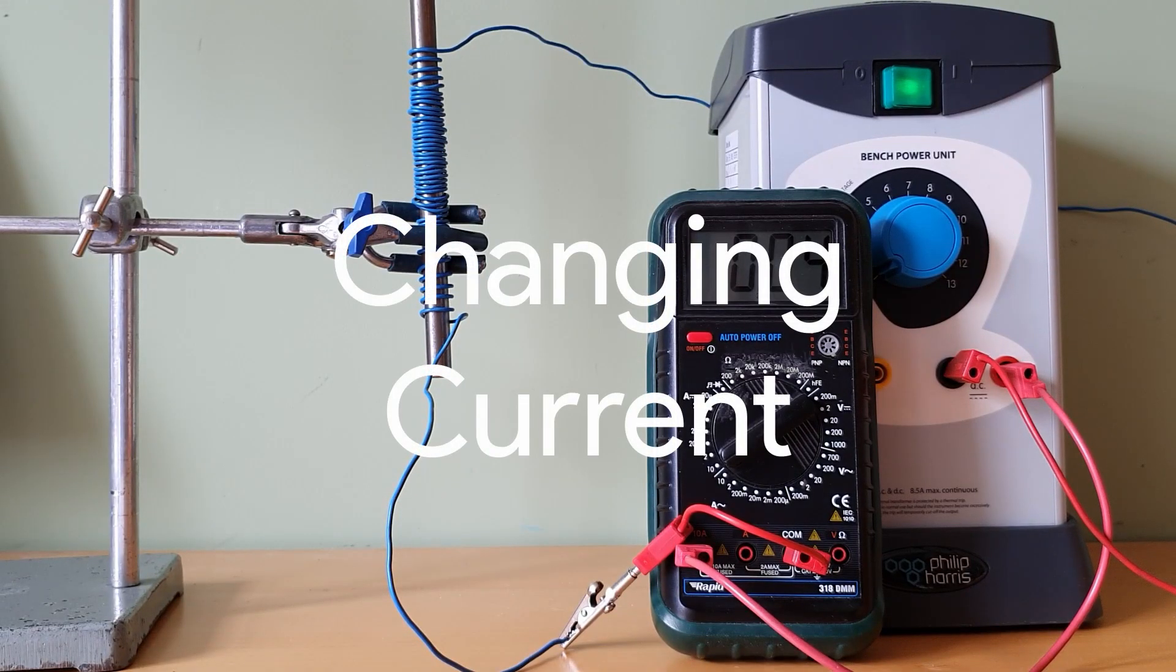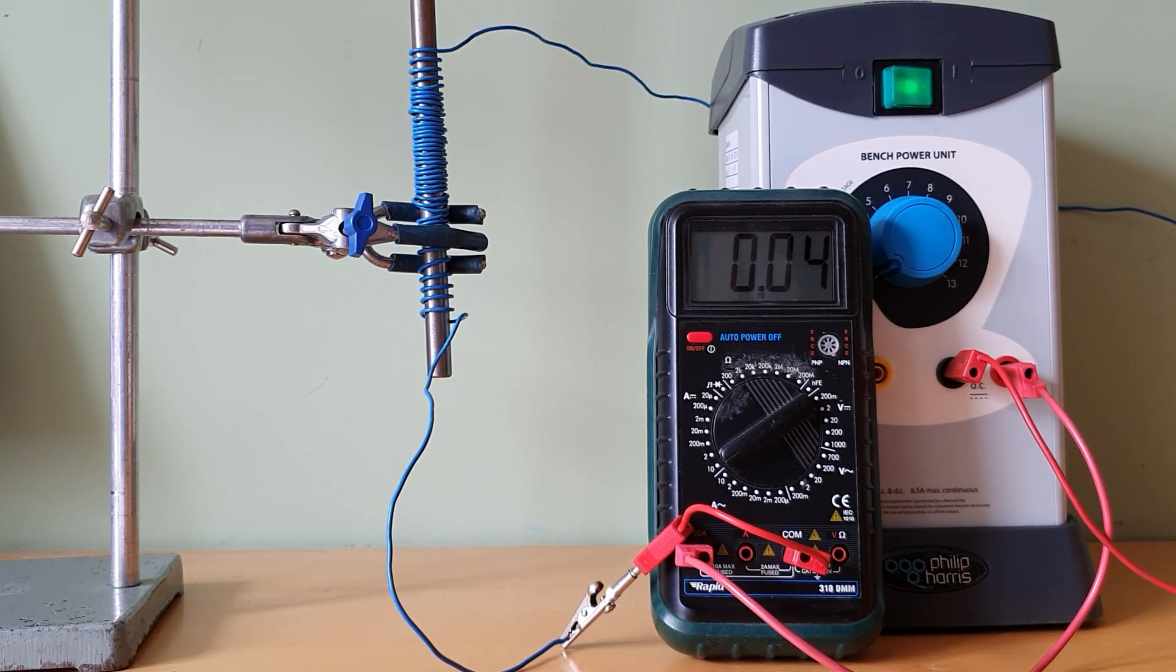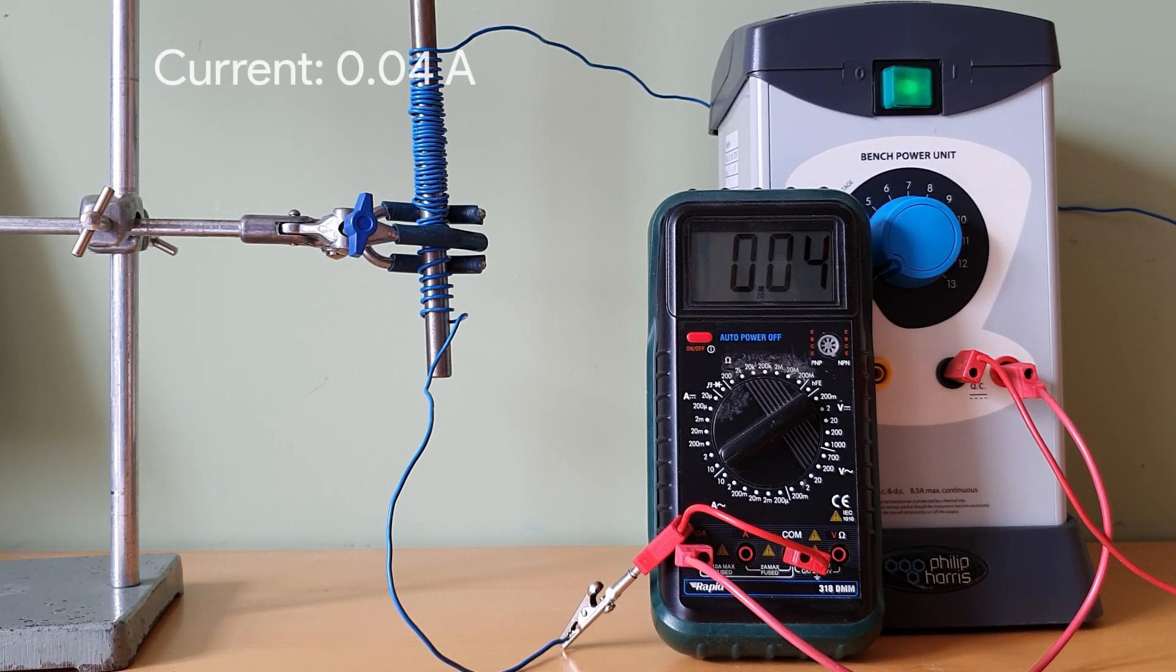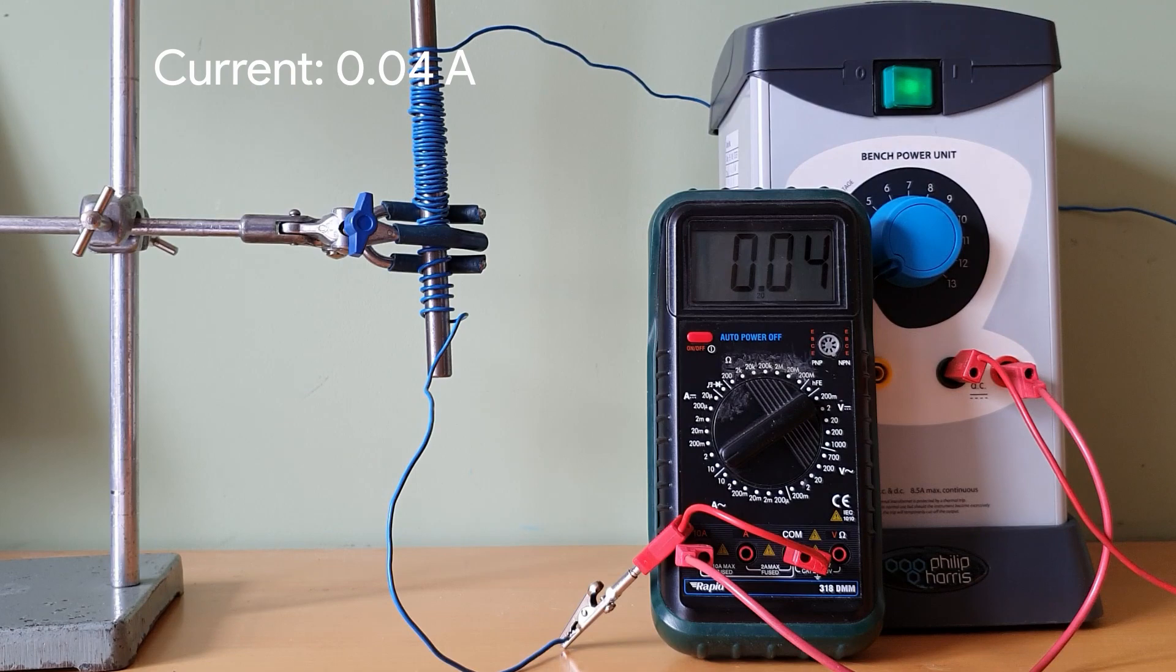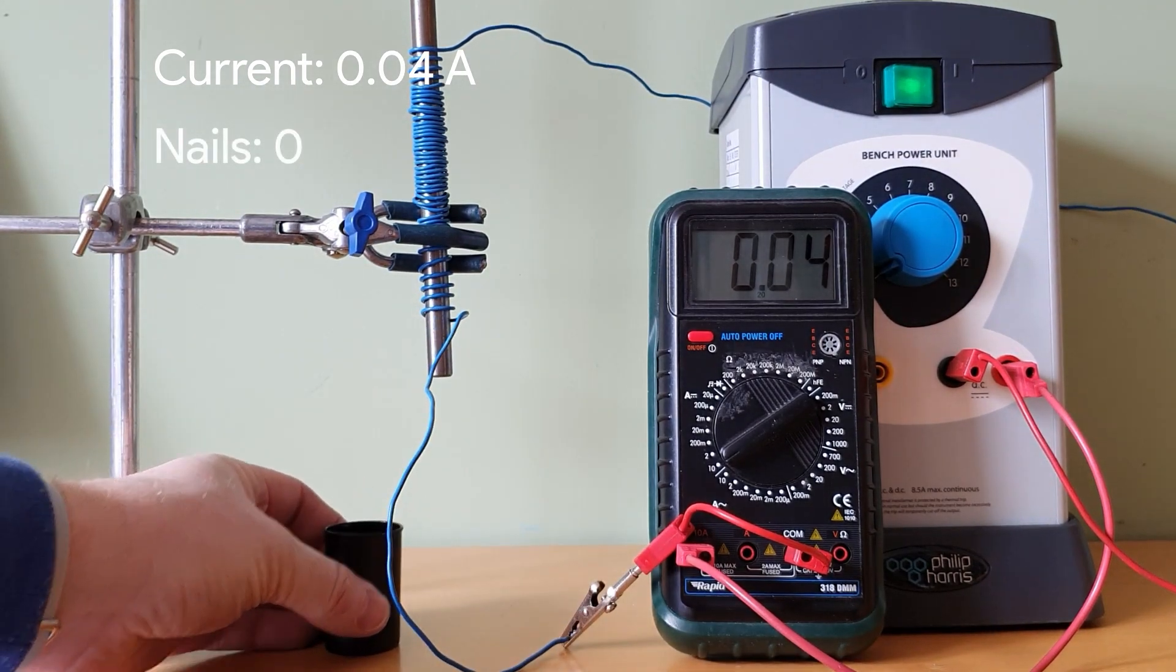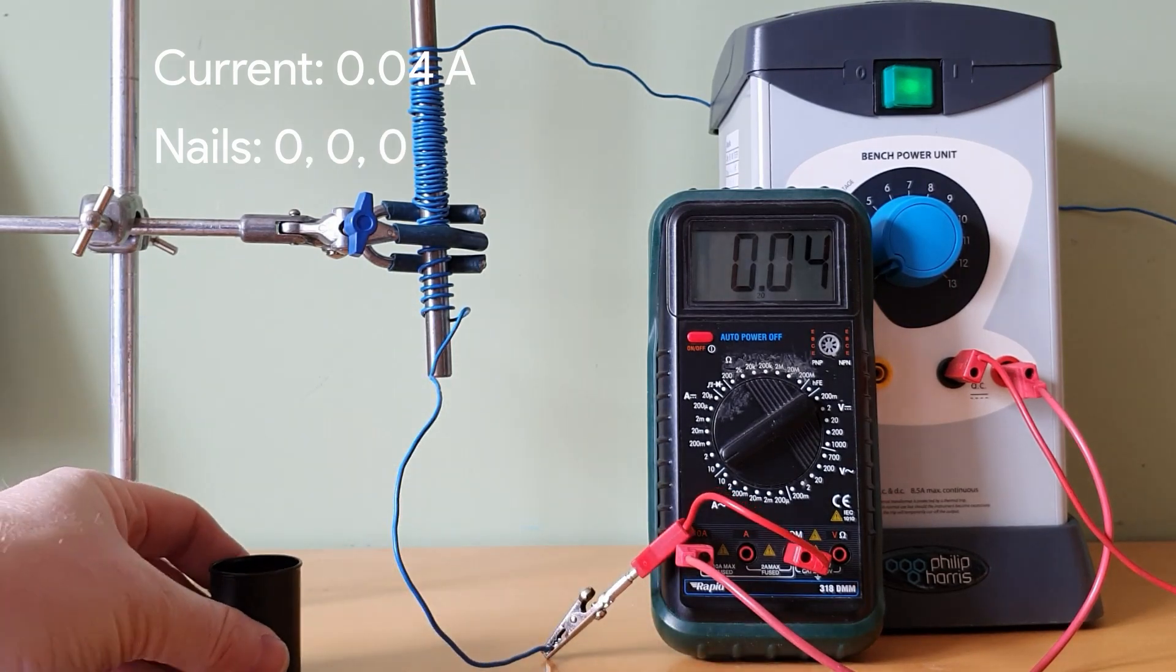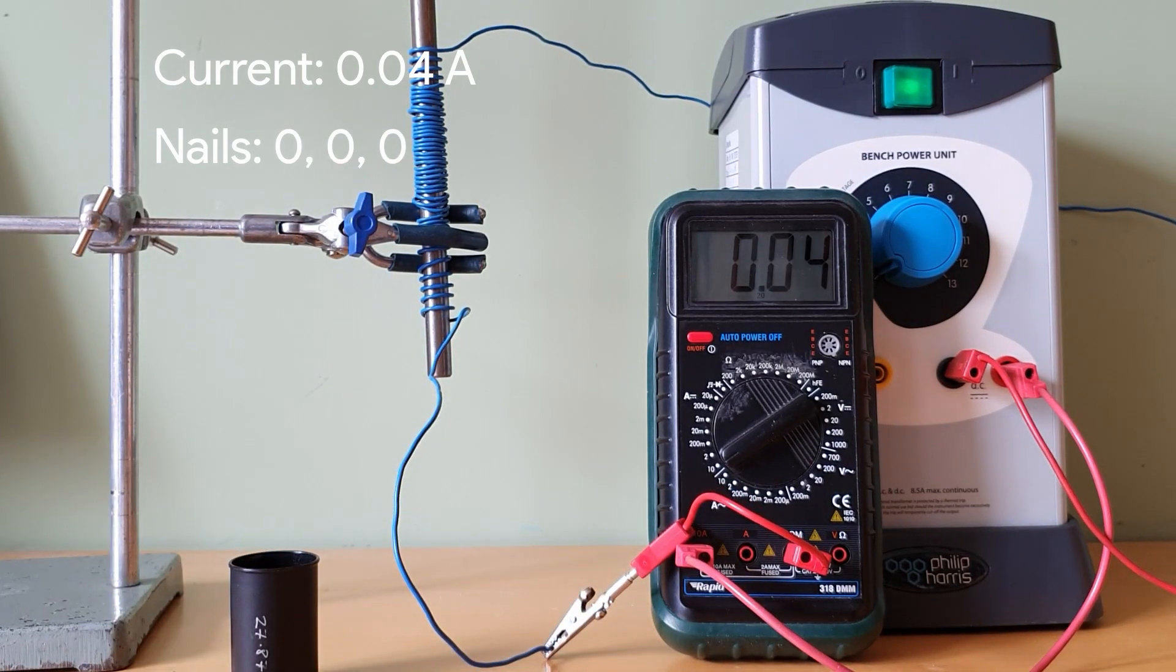Now we'll look at changing the current and what effect it has on the number of nails that can be picked up. So here's my power supply in its lowest setting above off. The current is 0.04 amps and it picks up no nails. Zero and 0.04. That's with 40 turns by the way.